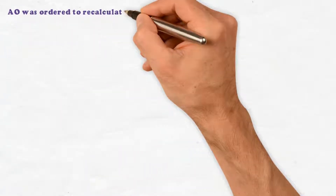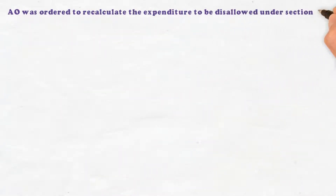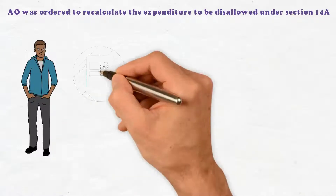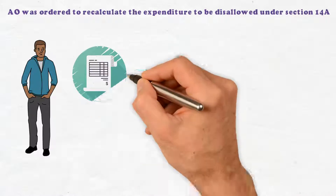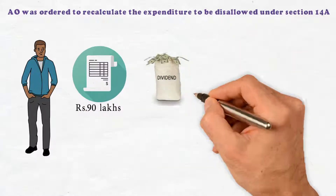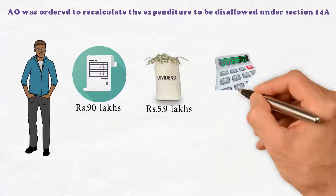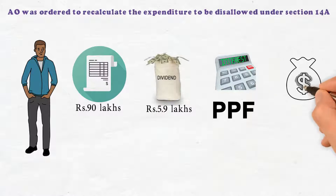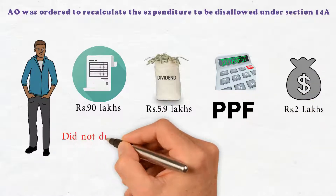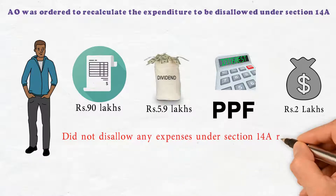The AO was ordered to recalculate the expenditure to be disallowed under Section 14A. S. Krishnamurthy filed his return of income declaring an income of Rs. 90,00,000. He had dividend income of Rs. 5,90,000 and interest on public provident fund of Rs. 2,00,000. S. Krishnamurthy did not disallow any expenses under Section 14A read with Rule 8D.